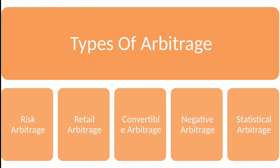Fifth is statistical arbitrage. It is an arbitrage technique that involves complex statistical models to find trading opportunities among financial instruments with different market prices. Mainly, we use statistical models in order to find the difference in the market prices of a similar commodity. These were the types of arbitrage.